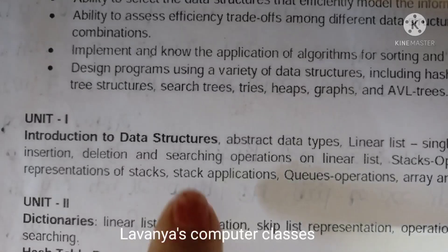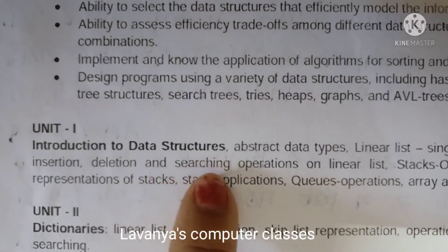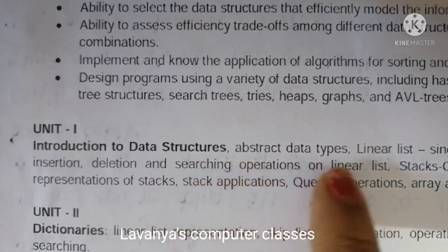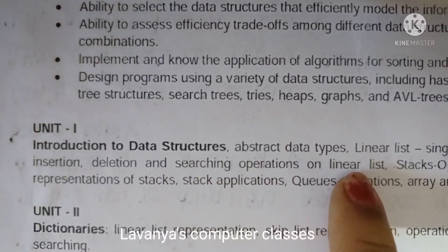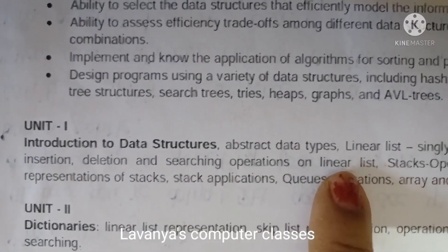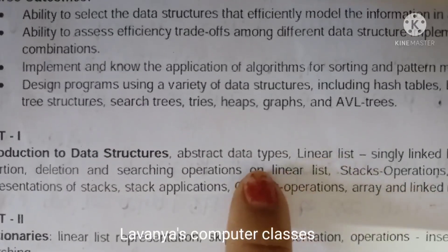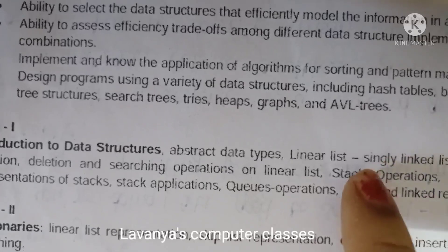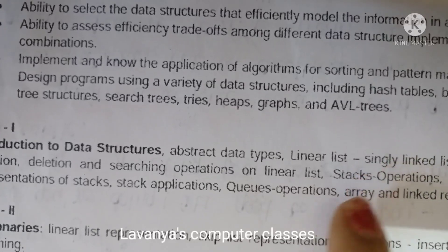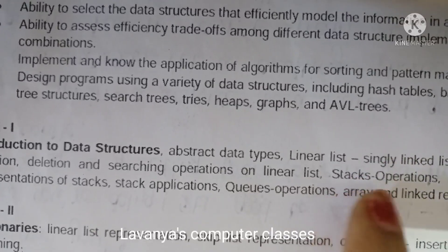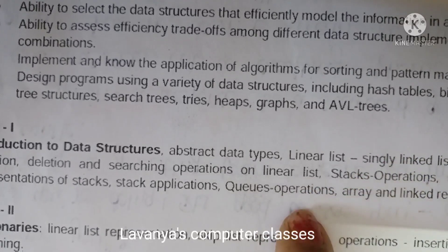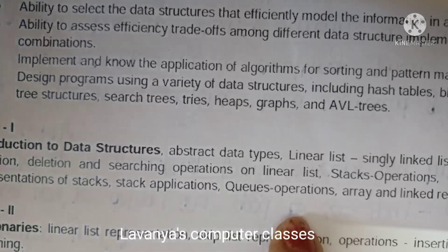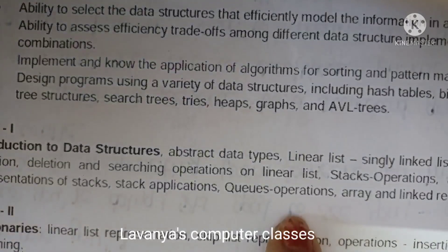In unit 1, they totally introduce data structures. In this, they explain about what is abstract data type, linear list, and stacks and queues. Only stacks and queues are explained.